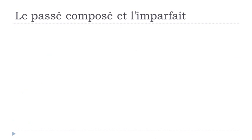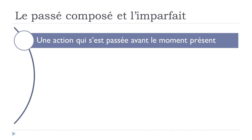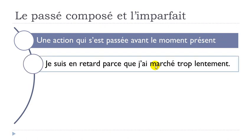Now, le passé composé. The first use is une action qui s'est passée avant le moment présent — an action that took place before the present moment. For example: 'Je suis en retard parce que j'ai marché trop lentement.' Je suis en retard — I am late — is the present, and then you give the reason: parce que j'ai marché, marcher means to walk, trop lentement means too slowly. So here j'ai marché is at the passé composé form.